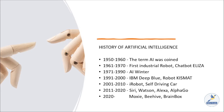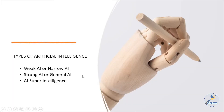More recent developments include Apple's Siri, IBM's Watson, Amazon's Alexa, Google's AlphaGo, and the socially emotional companion robot Moxie. The list of milestones in the history of artificial intelligence is endless, and as work continues, more and more things will be added. Moving on to the types of artificial intelligence.